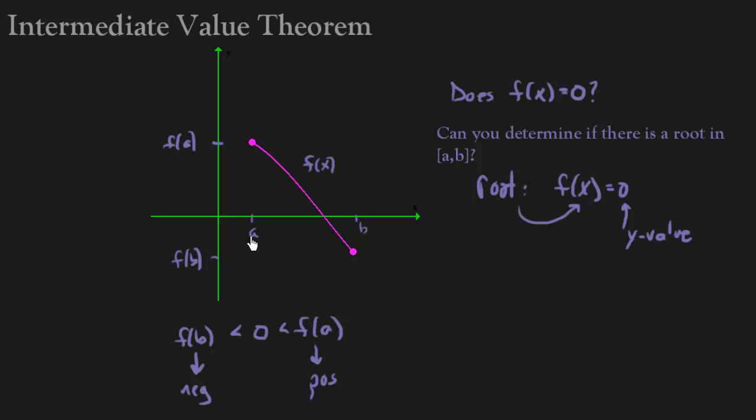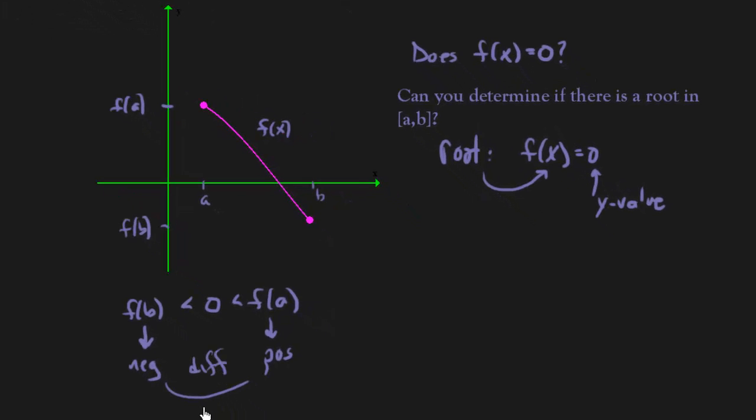So if you can show that f of a and f of b have different signs, so different signs, then you know that your graph has to cross the x-axis. That's where our root is.